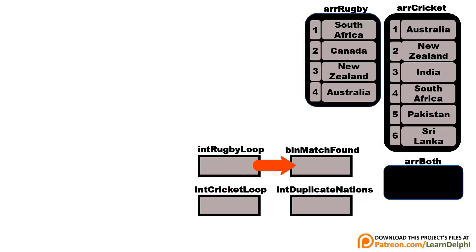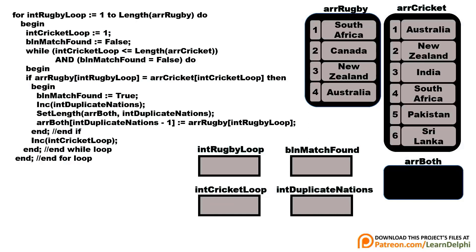The boolean is an indicator of when the loop must stop the current cycle and continue searching for another matching country. We also need an integer variable that sets the size of the dynamic array before adding a new matching country. The outer loop will cycle through the names of the rugby nations, and the inner loop will cycle through the cricket nations. Now let's see how the matching will happen.